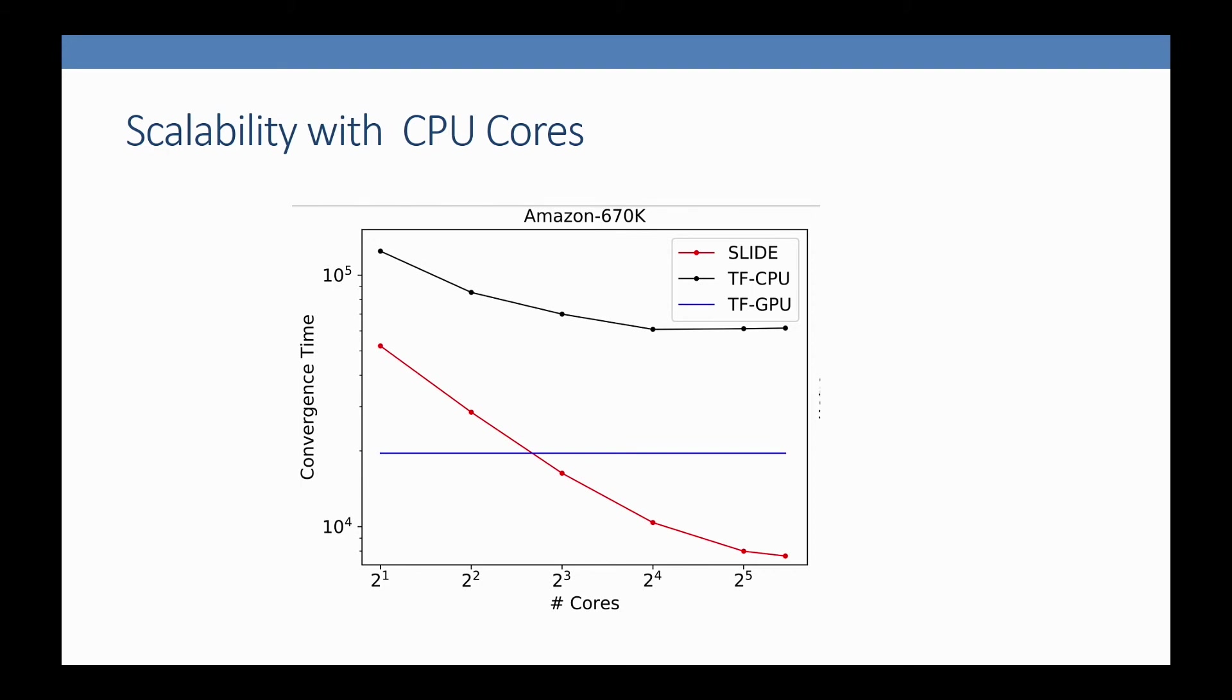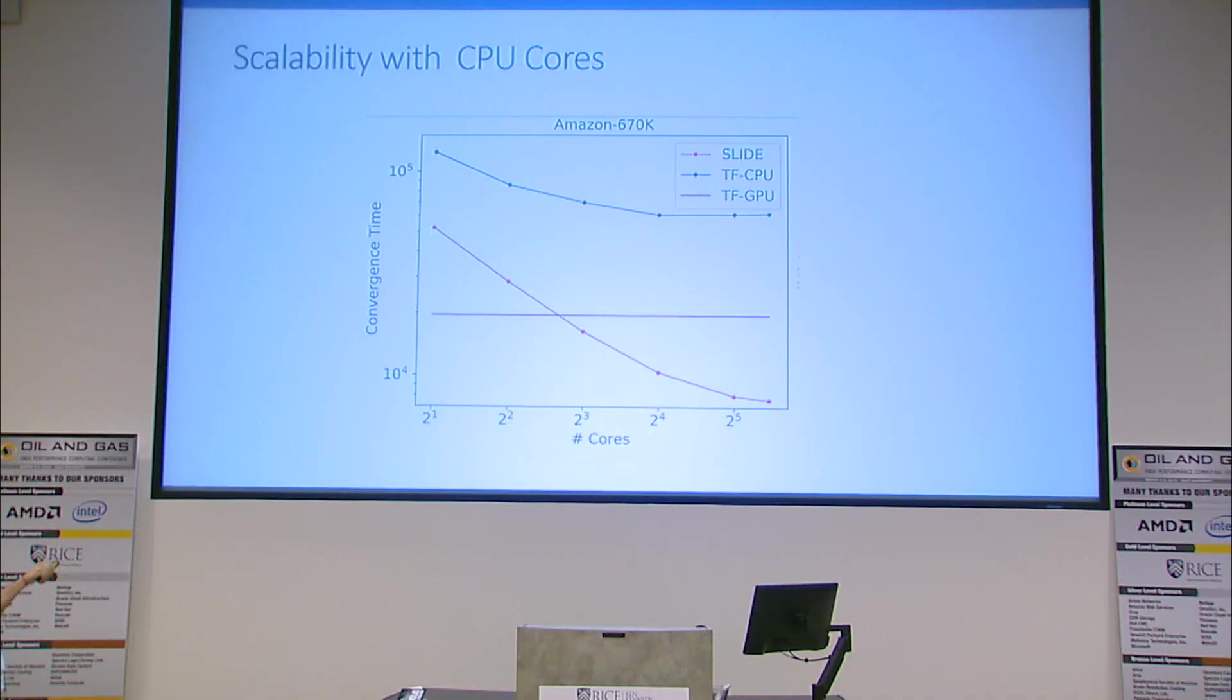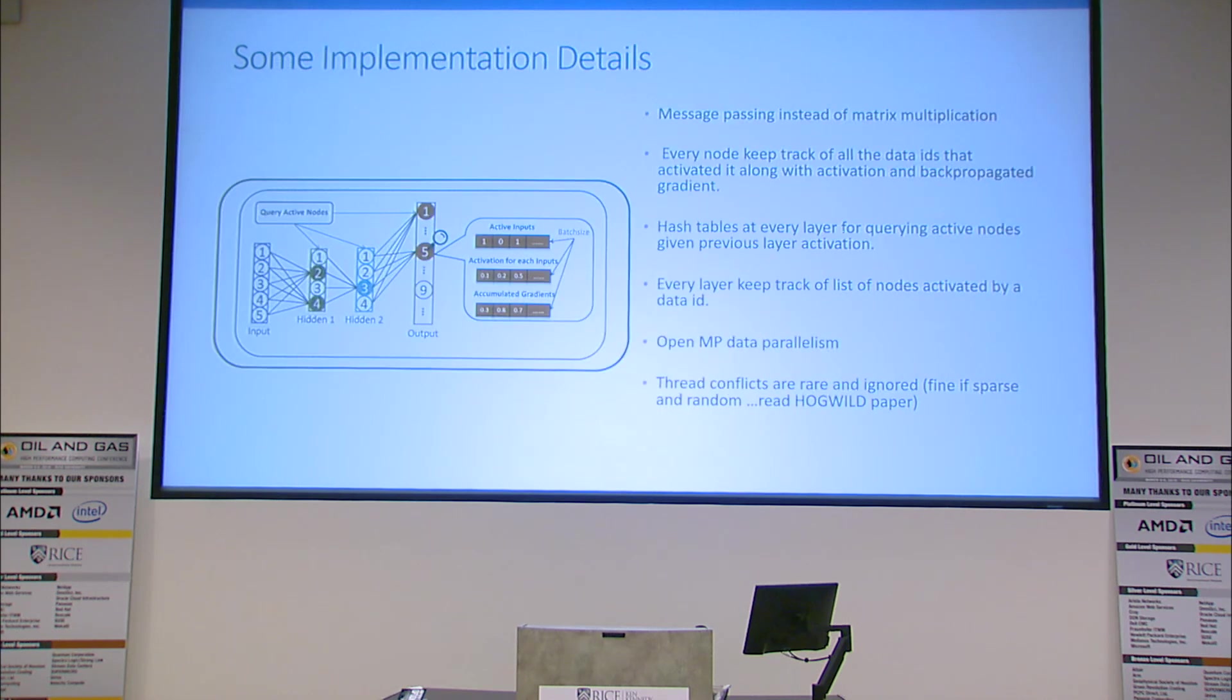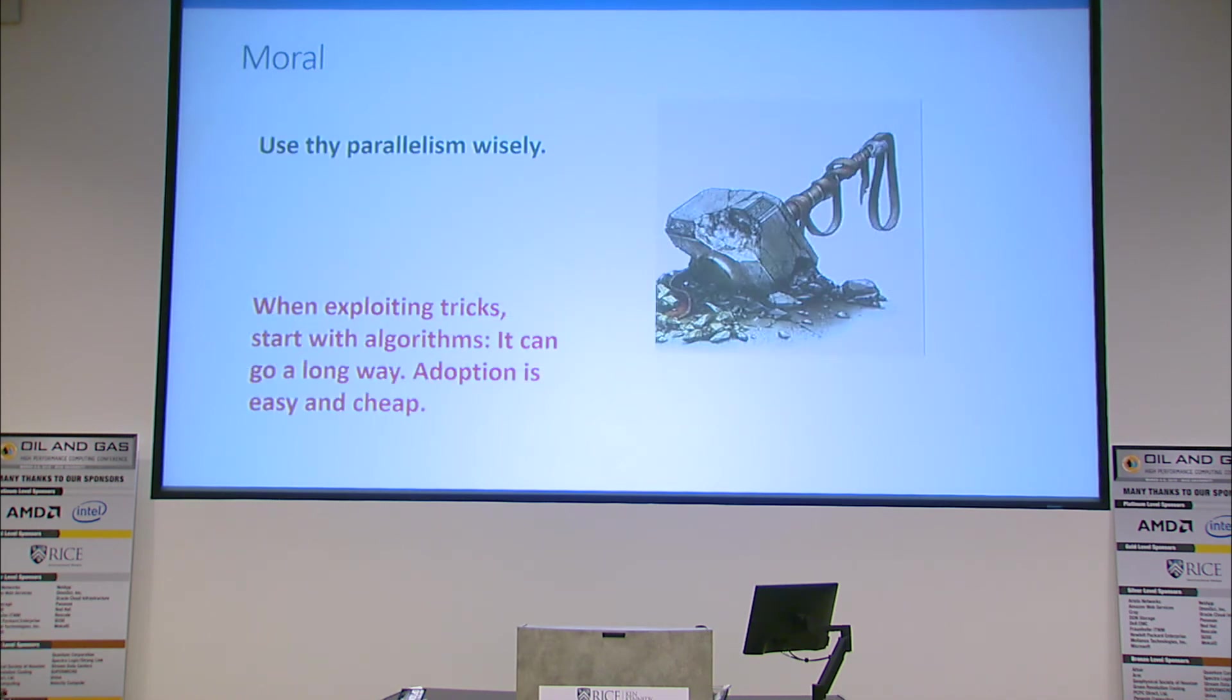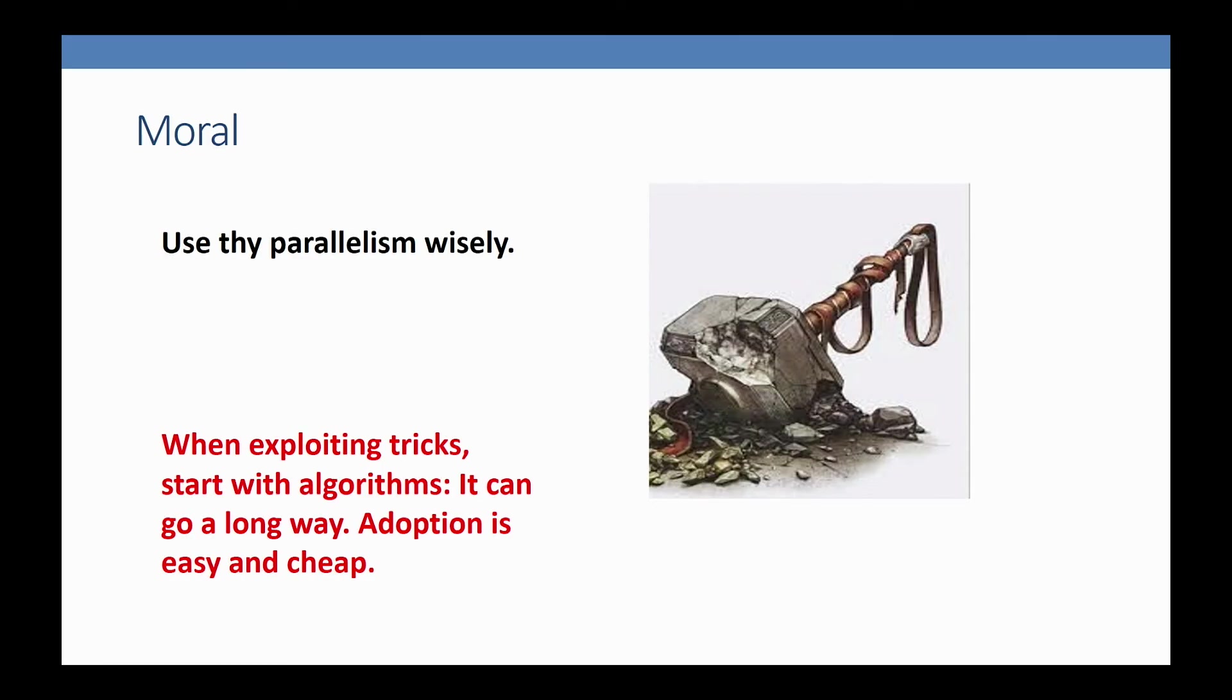In the last minute, I want to show you scalability with number of cores. You only need roughly around 8 cores to beat the GPU. This is the GPU, this is number of cores in log scale, and this is convergence time—the time required to converge. It goes down roughly straight. This is TensorFlow CPU.